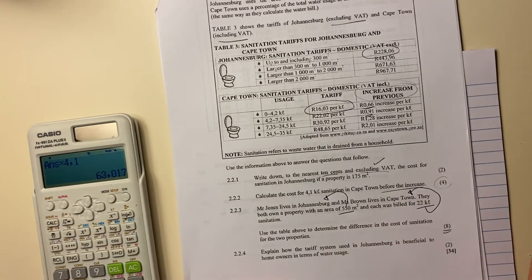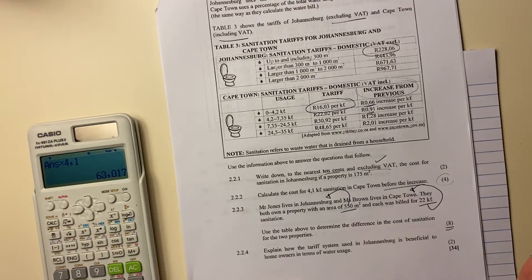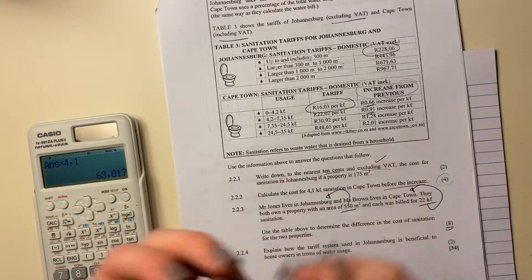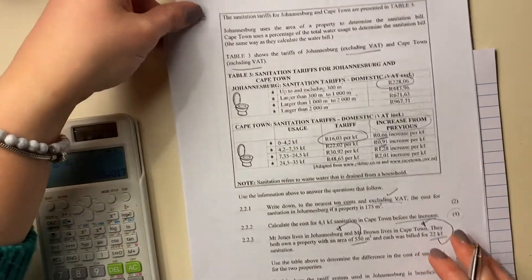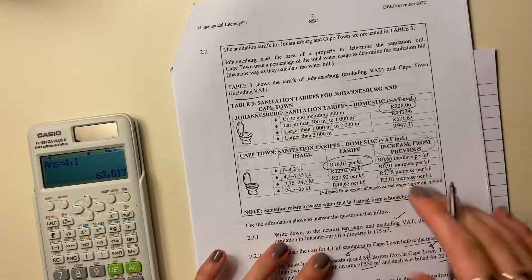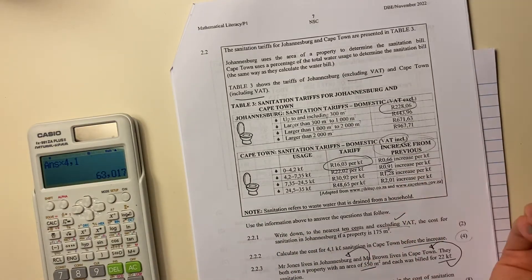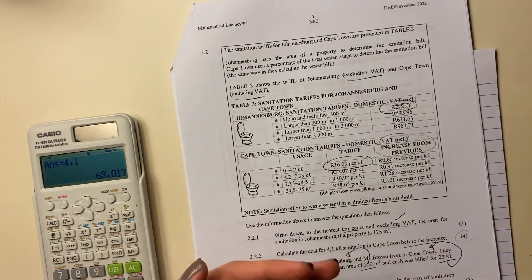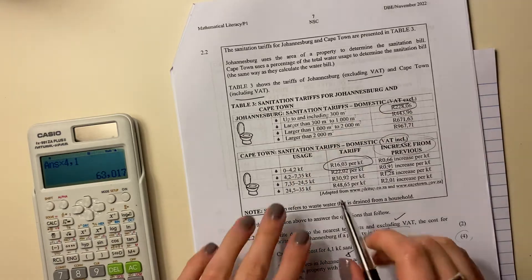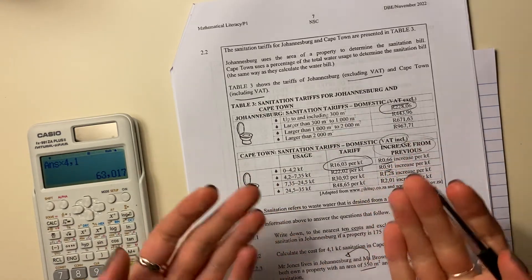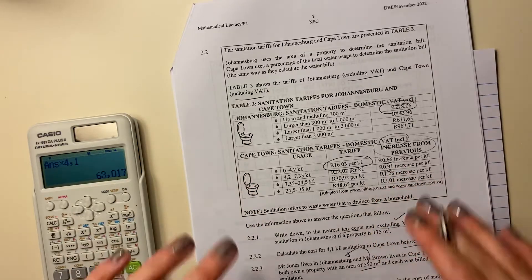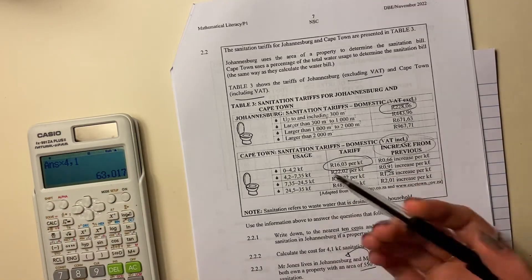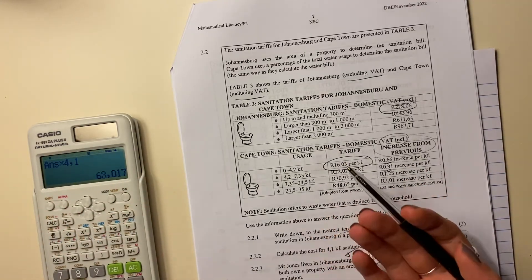It says use the table above to determine the difference in the cost of sanitation for the two properties. So we're going to work it out for Mr. Jones and we're going to work it out for Ms. Brown and we're going to compare them. Now, something that's quite important here, which students seem to miss quite a bit in this question, is that the Cape Town sanitation bills include VAT and the Joburg ones don't. So when we're comparing them, you either need to add VAT to the Joburg one, or you need to strip out VAT from the Cape Town one in order to compare them on a like basis. So what I'm going to do here is I'm going to include VAT for Johannesburg and then compare them at the end, but you could do it the other way and you should still get to the same conclusion.